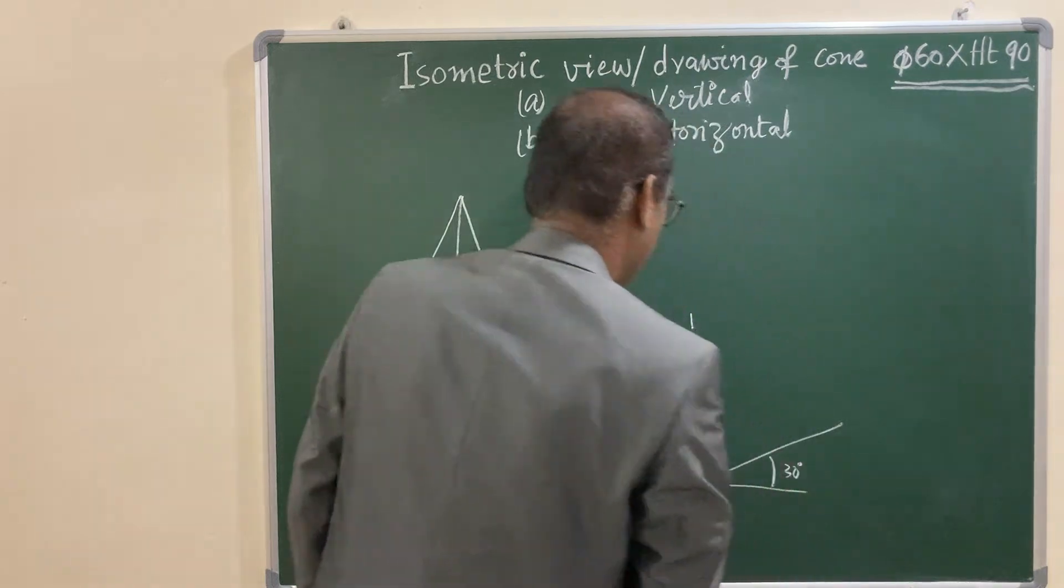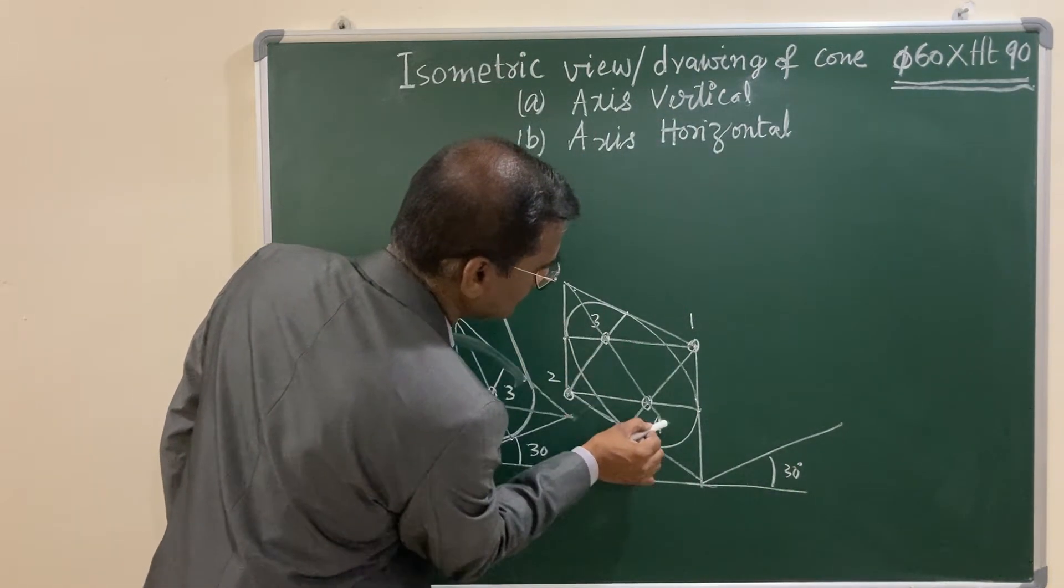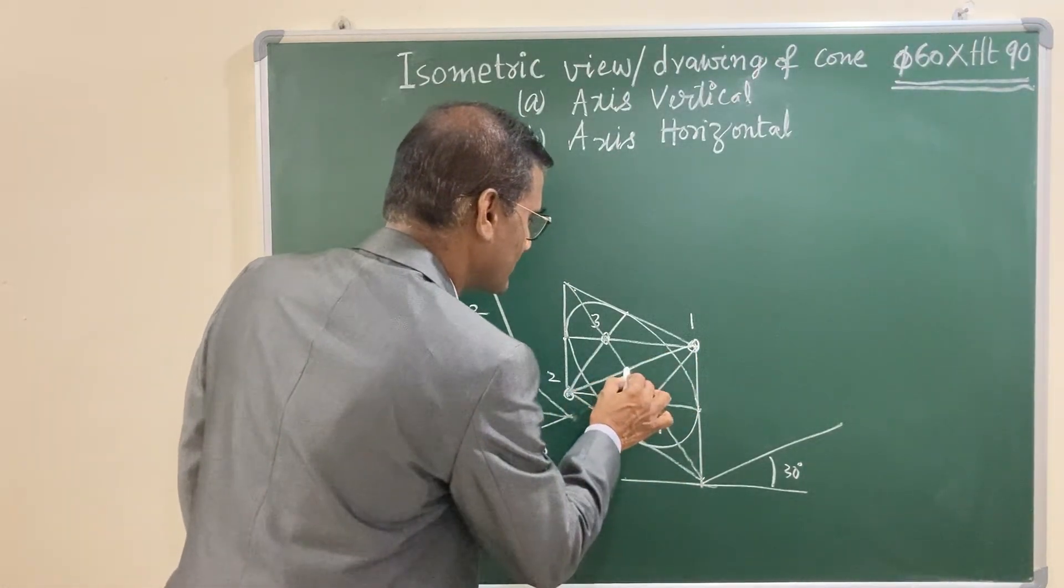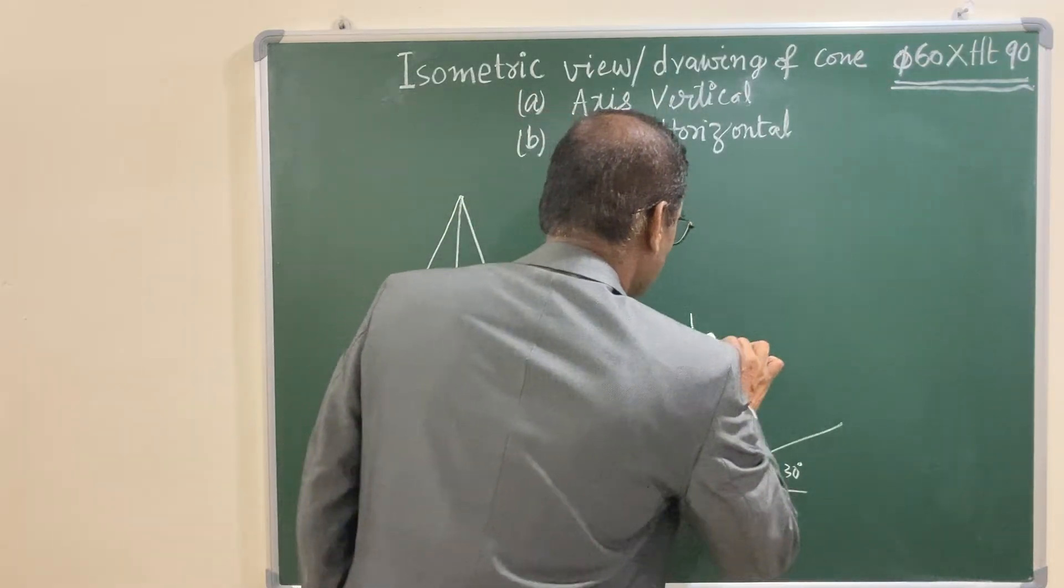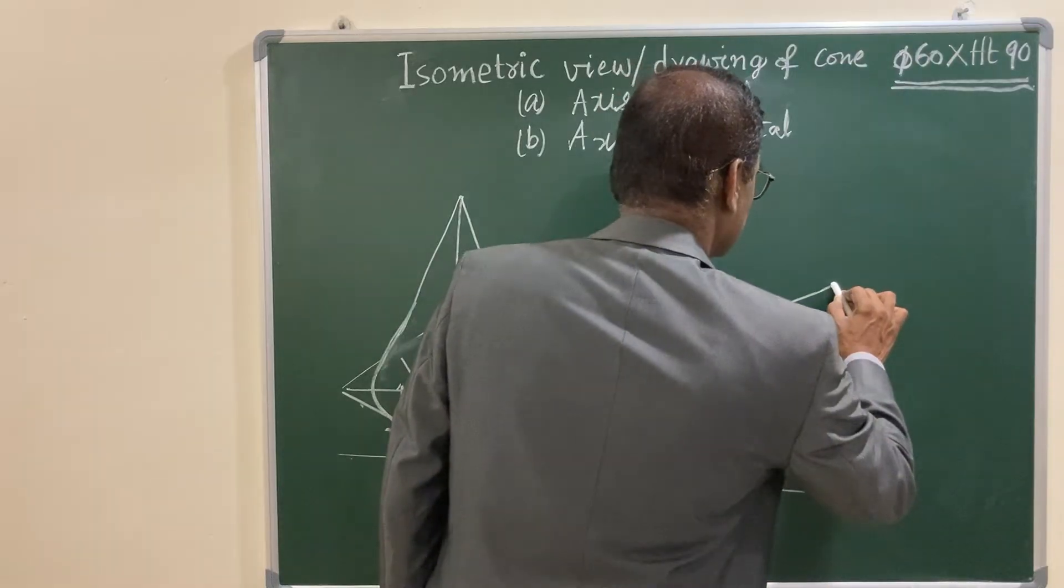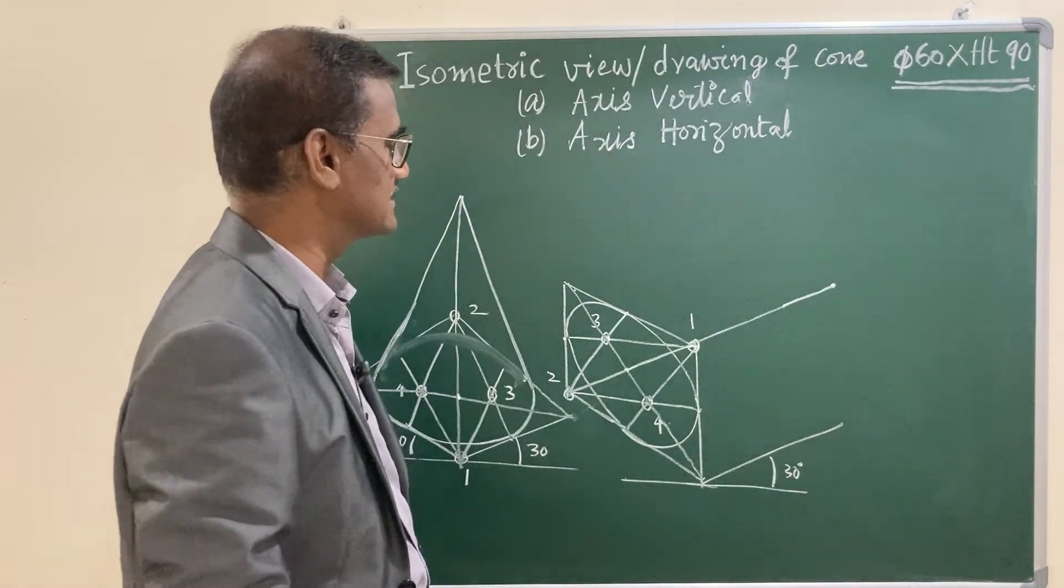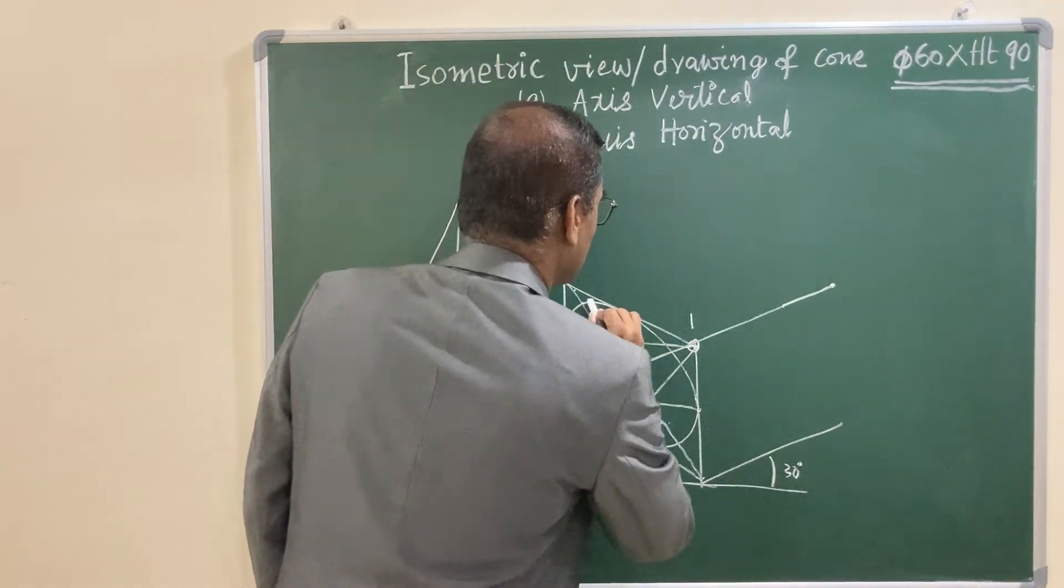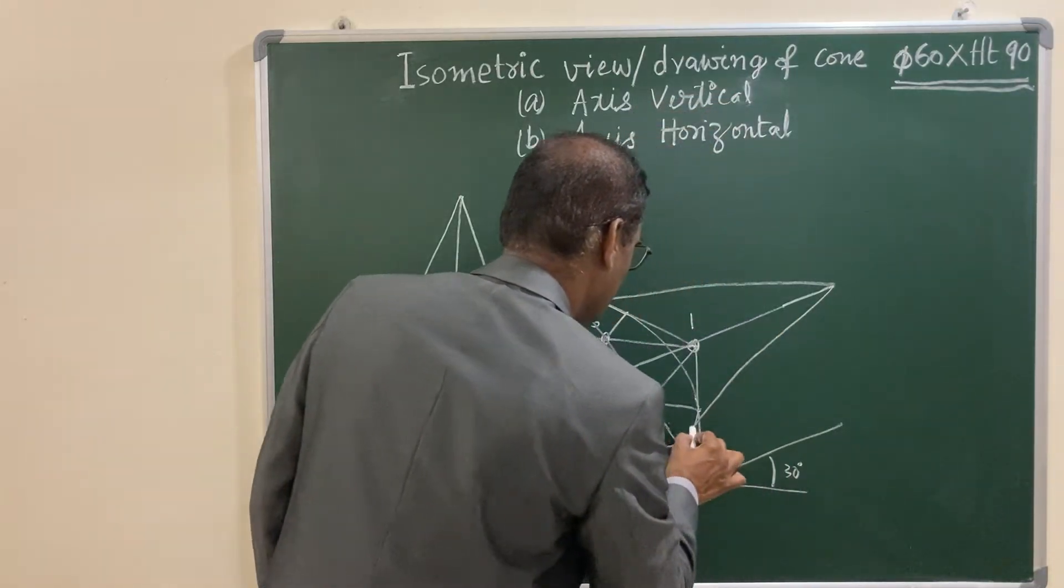Now what you do is draw a line at an angle 30 degrees with the horizontal and locate the midpoint by joining longer diagonal and shorter diagonal. From this point, draw a line parallel to 30 degree line, and locate the apex at a distance 90 mm from the center. Join the apex to the ellipse. Draw a tangent, and your isometric view keeping axis horizontal is completed.